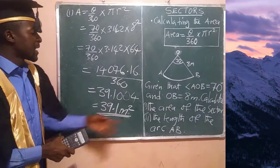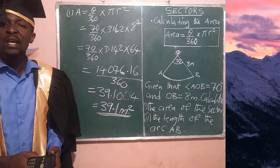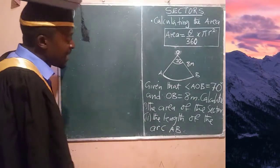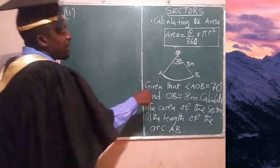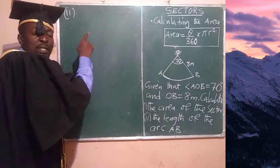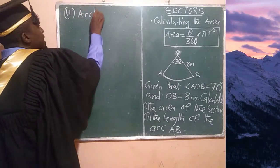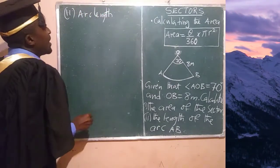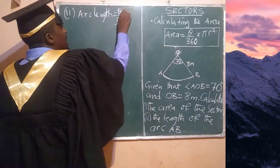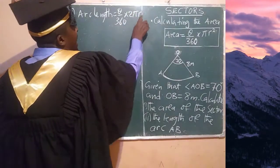That is our answer for question one. Now we move to question two, which asks us to calculate the length of arc AB. The formula for arc length is: arc length equals theta over 360 times 2 pi r.